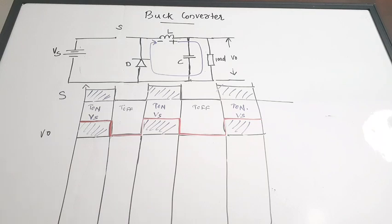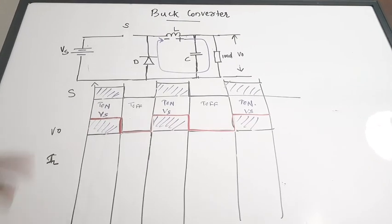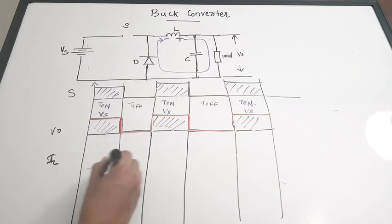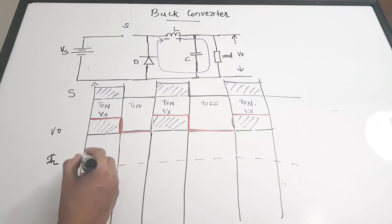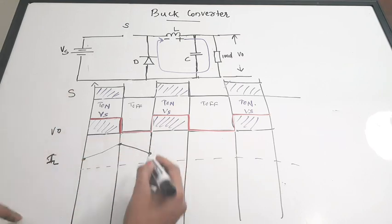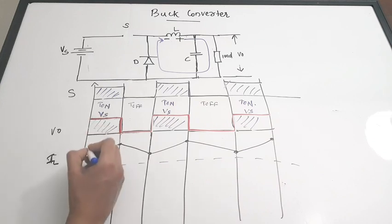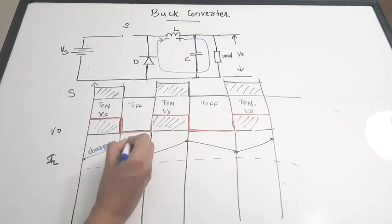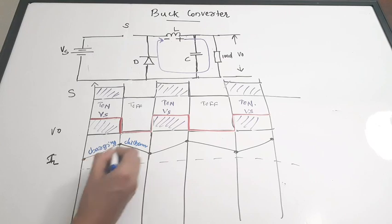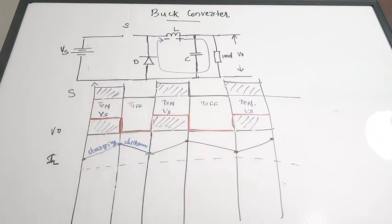Next we look at the inductor current waveform I_L. When the switch is on, the inductor is charging; when the switch is off, the inductor is discharging. Starting from a minimum value, the inductor current rises to a maximum during T_on (charging), then drops back to a minimum during T_off (discharging). This minimum value need not be zero, but it will discharge. The cycle of charging to maximum and discharging to minimum repeats with each switch cycle.